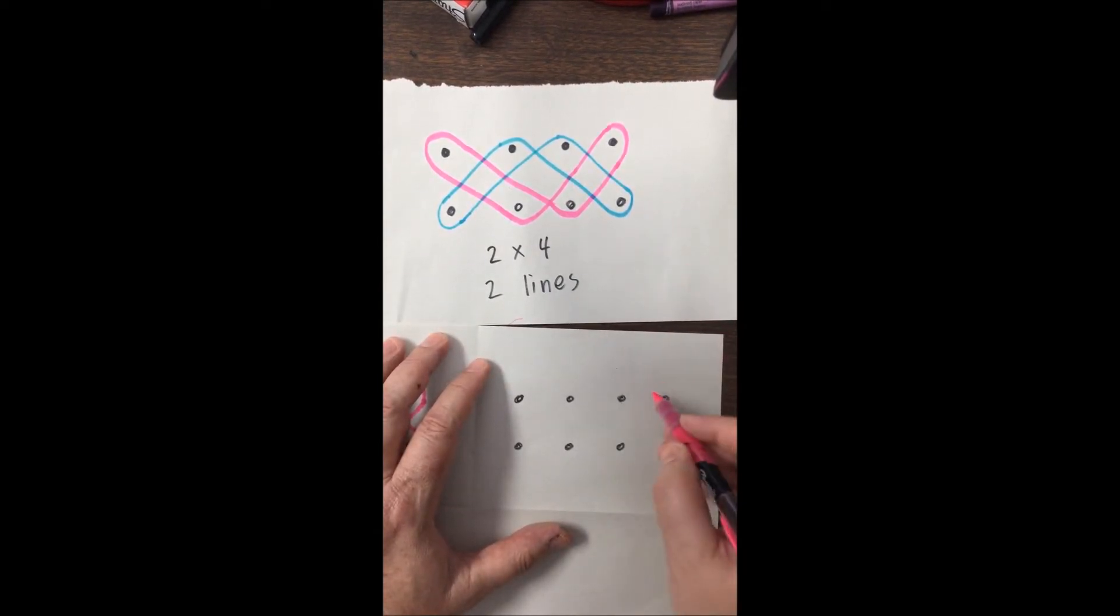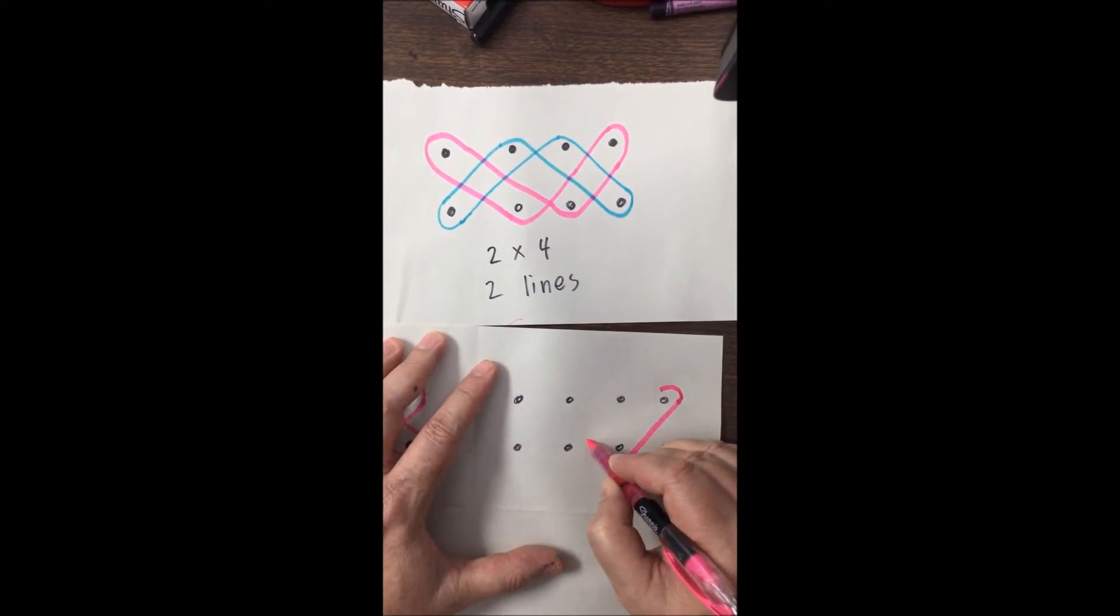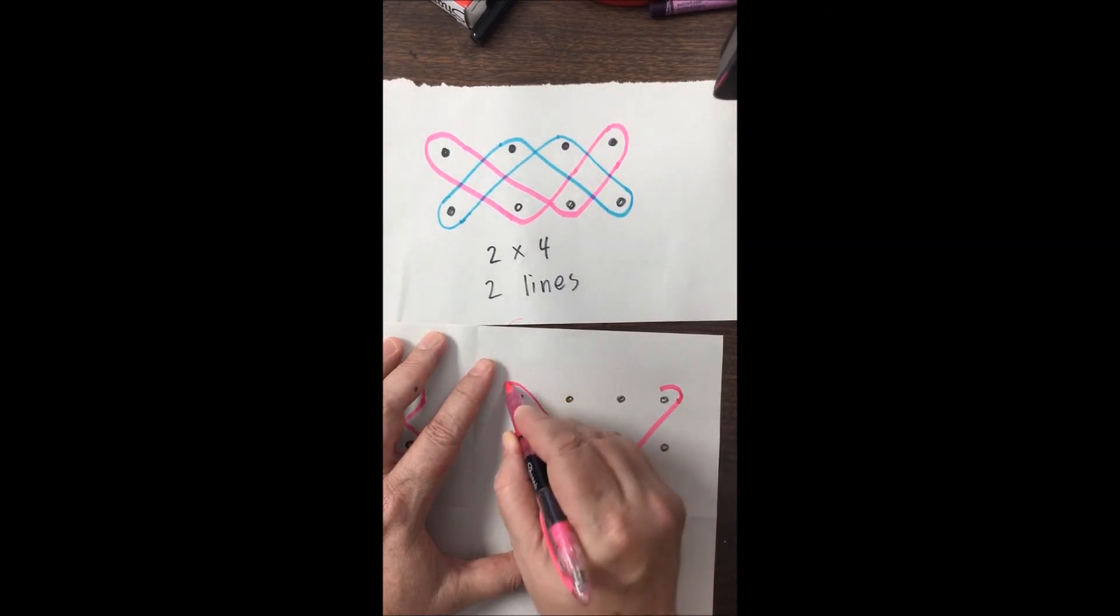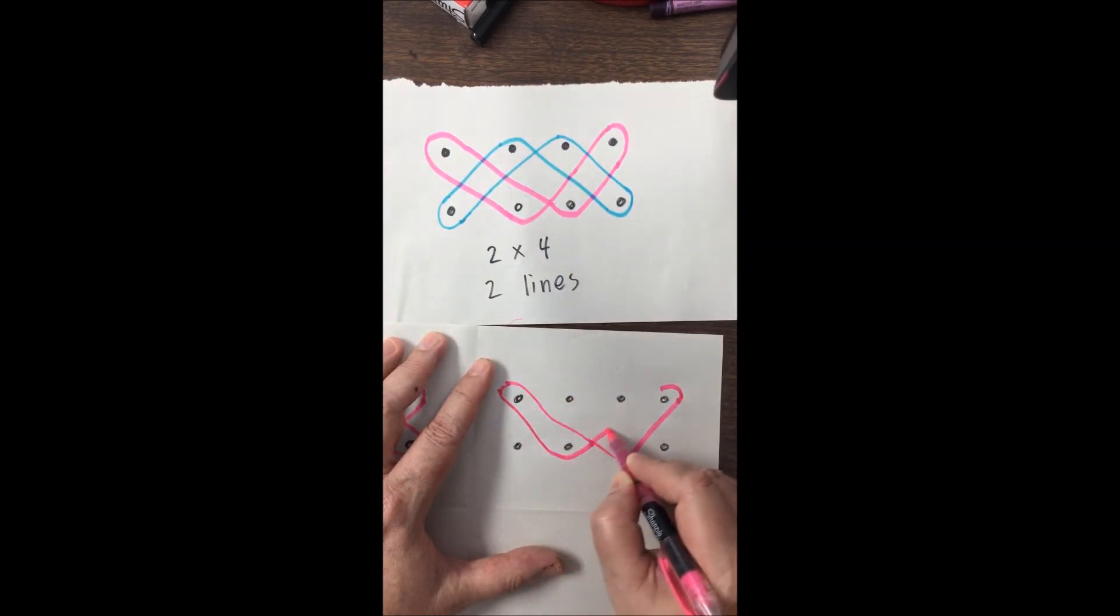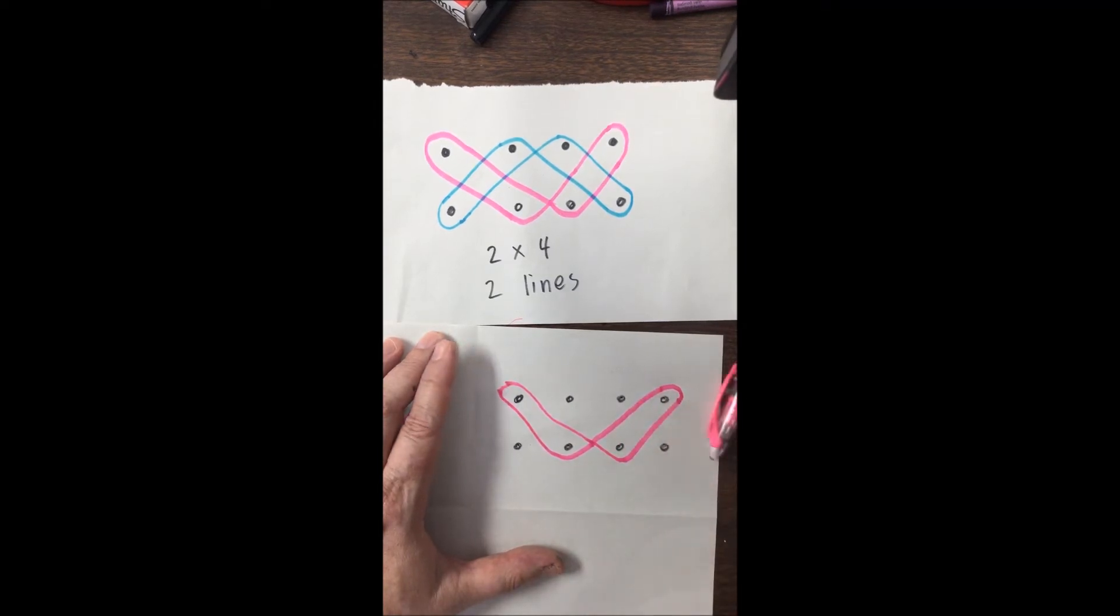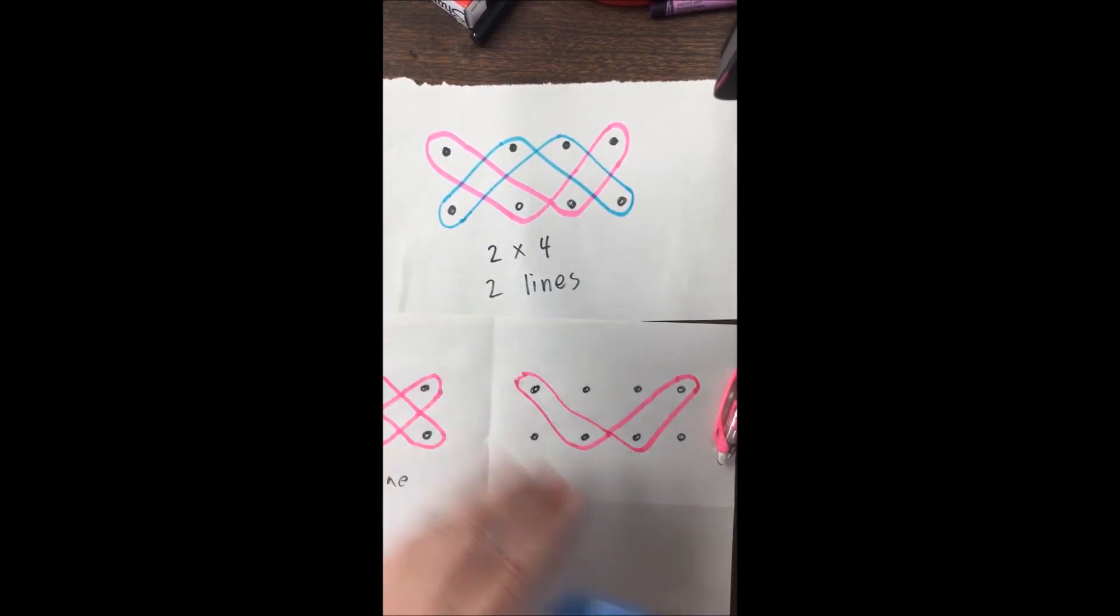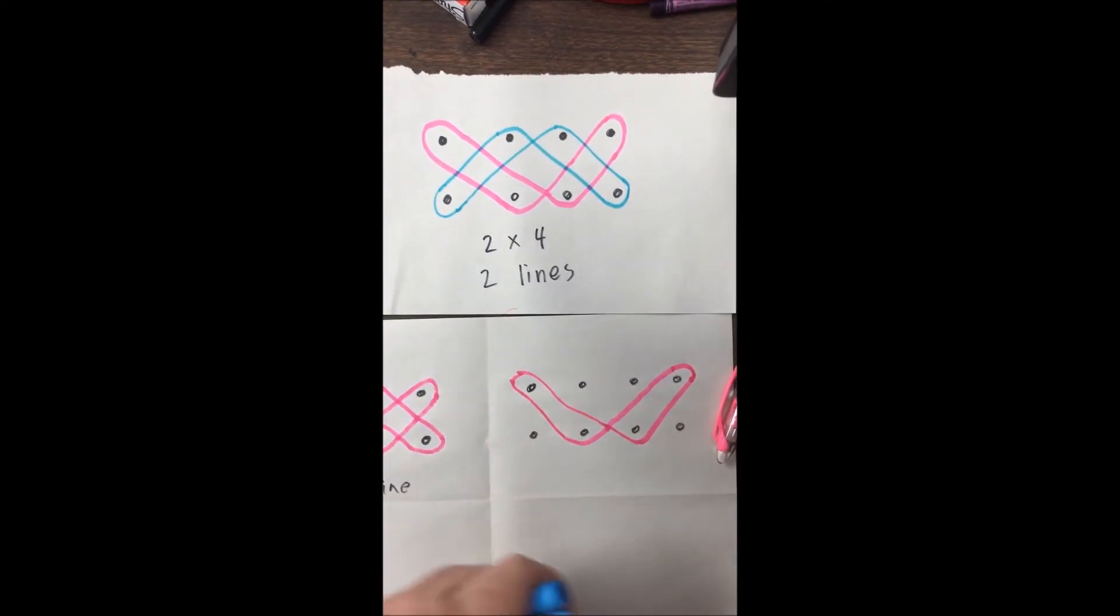I'm going to start up here. So this wraps around, goes down to this dot, and then goes way over here to this other one and then back down to this one like that. I'm going to switch colors here.